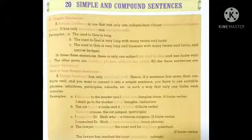Now we will see how to form simple sentences. A simple sentence has only one finite verb. We have to use suitable phrases, infinitives, participles, adverbs, etc. in such a way that only one finite verb remains. Then you should remember that you have to use one finite verb. Let's see the examples.